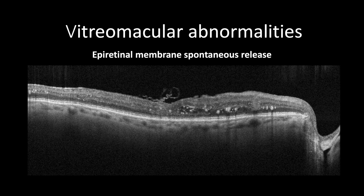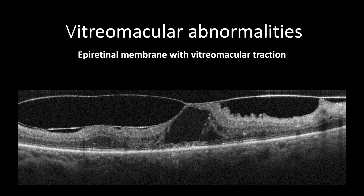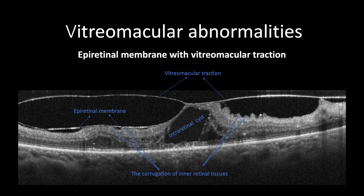In cases where the epiretinal membrane detaches spontaneously, it will look like a scroll located next to the inner retinal surface. However, cases presenting with both epiretinal membrane and vitreomacular tractions will have retinal features of both entities, and sometimes splitting of the posterior cortical hyaloid is seen on OCT.